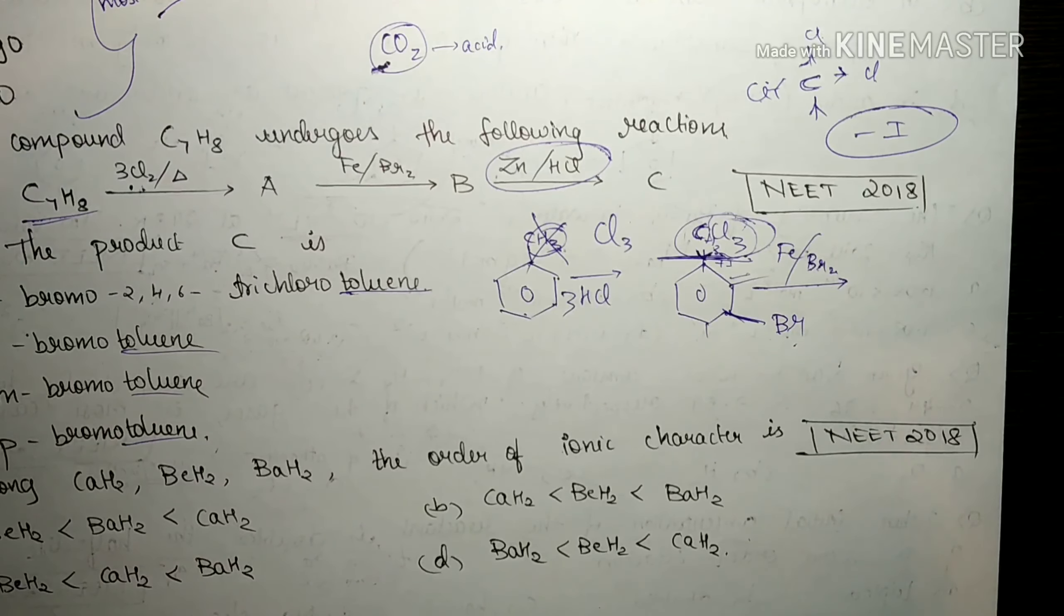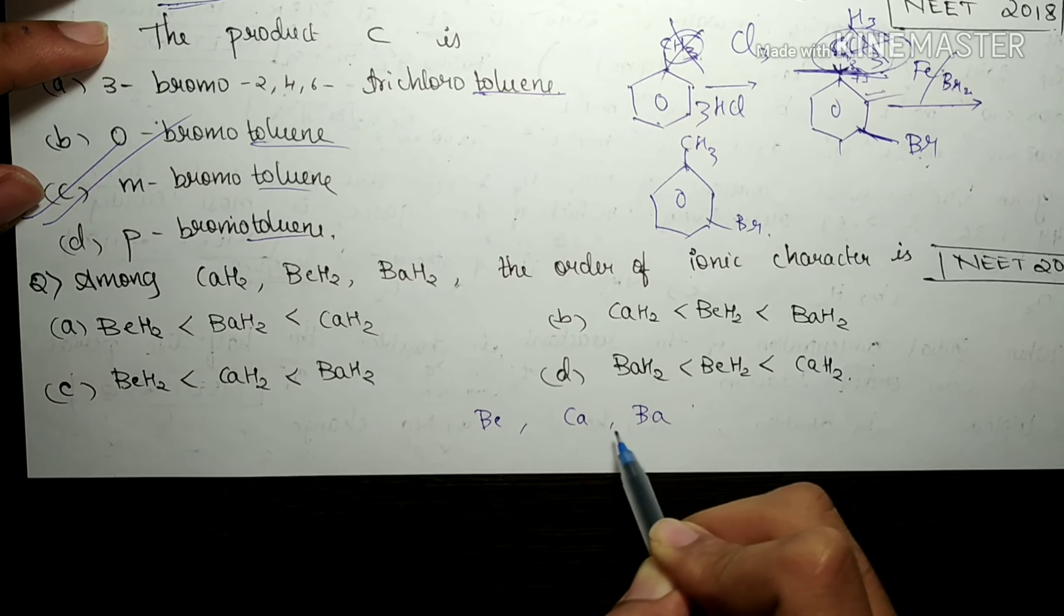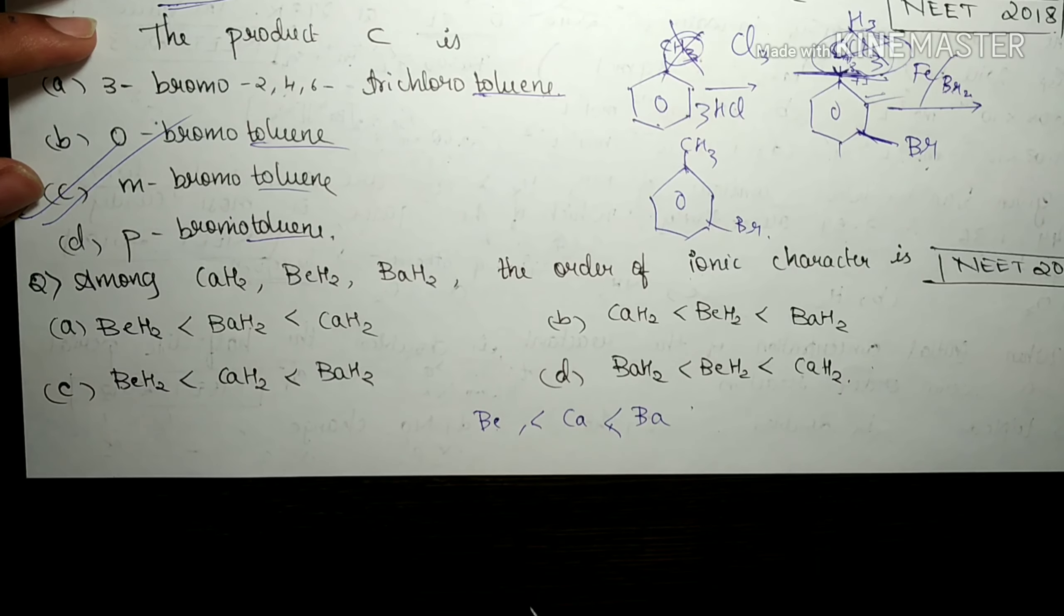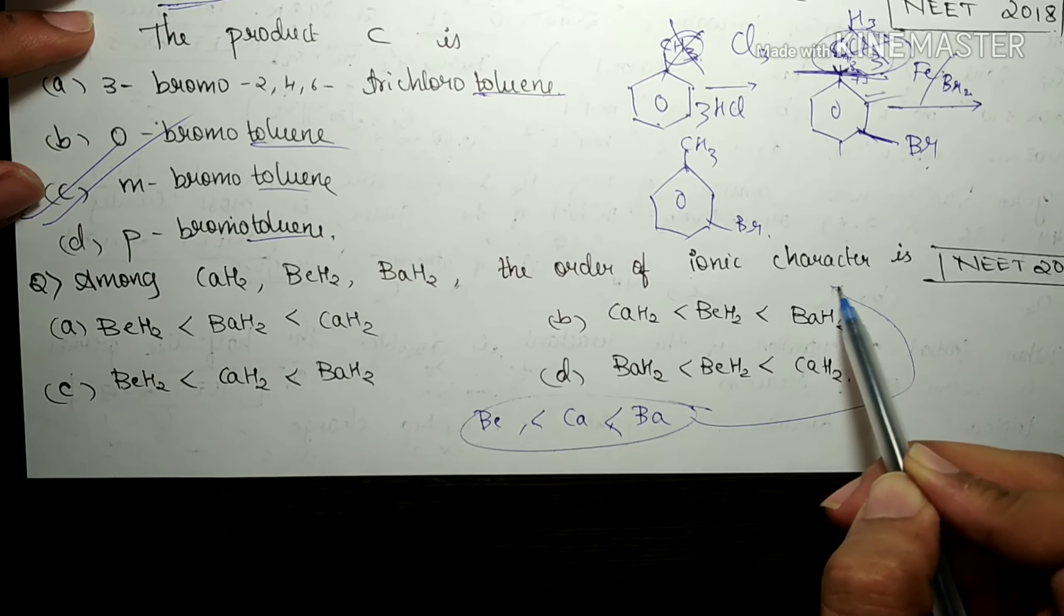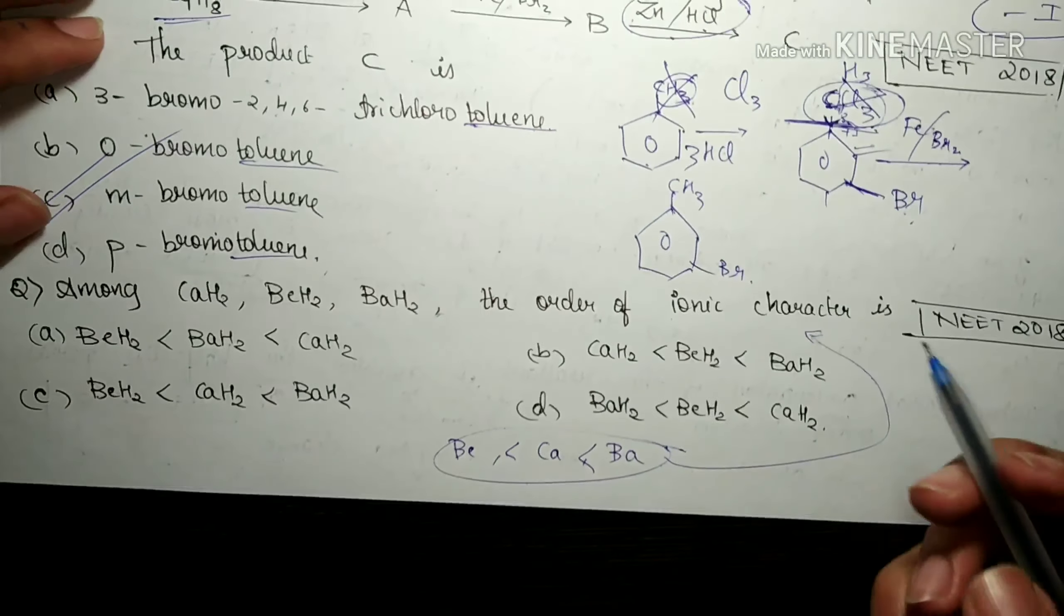Now the last question says, among CaH2, BeH2 and BaH2, the order of ionic character is what? We need the ionic character. We know that more the metal in the compound is, more the ionic will be the compound. So out of Be, Ca and Ba, we know that this is most metallic and Be is the least metallic. So the same order will be followed in the ionic character of these compounds also. So BaH2 has to be maximum. These two cannot be correct at all because calcium is not more metallic than barium. So option C will satisfy Ba, Ca and Be. So option C is the correct answer.